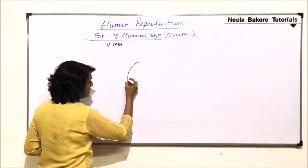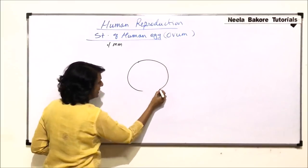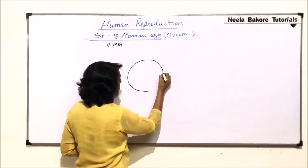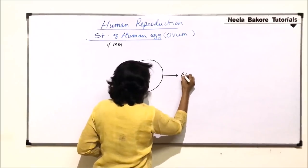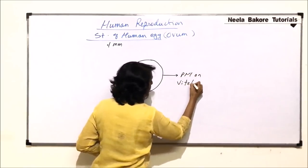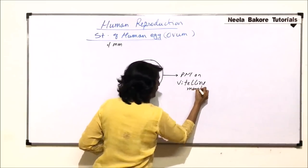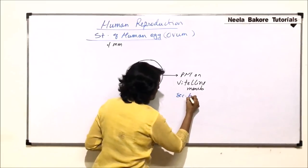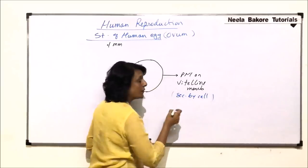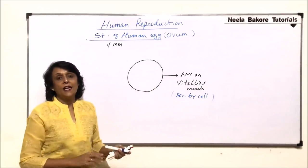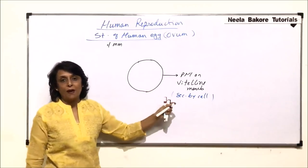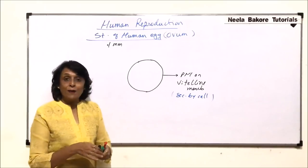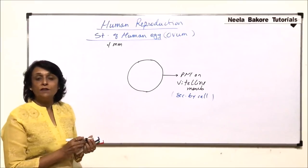The cell is round and has its own plasma membrane. This plasma membrane of the egg is known as the vitelline membrane. This membrane is secreted by the cell itself. On the basis of this, membranes secreted by the cell are called primary membranes, then we have secondary and tertiary membranes. So the vitelline membrane is considered the primary membrane.